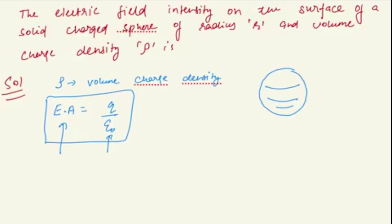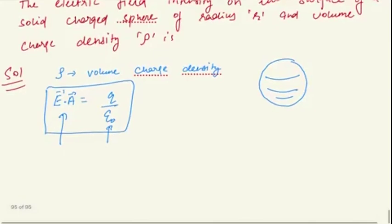For the closed surface we can write E dot A equal to Q divided by epsilon naught. Now we don't know what is Q, but rho is given. And we need to find the electric field at the surface.